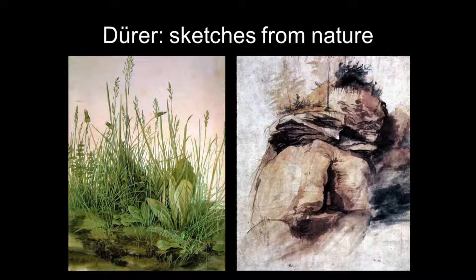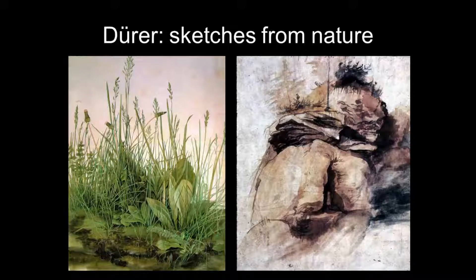One of these nature studies is called A Tuft of Earth or A Clod of Earth — both watercolors. You can recognize the different grasses and some things we call weeds, extremely naturalistic. There's also a drawing of a cliff which seems so freely painted. I always think Dürer is incredibly detailed and hard-edged, certainly not impressionistic. But here, when he's sketching in his notebook, he comes up with something extremely atmospheric and free — it even has a modern feeling about it.